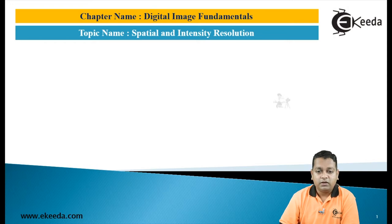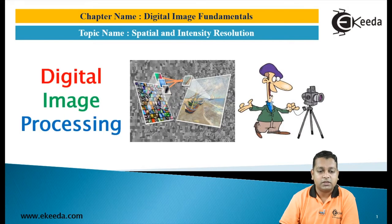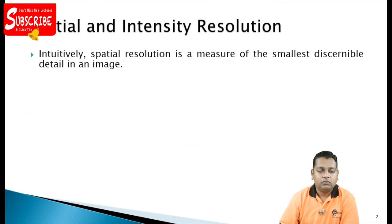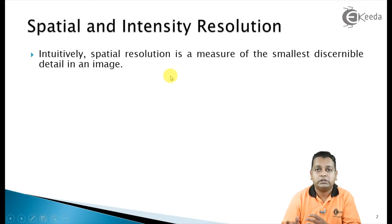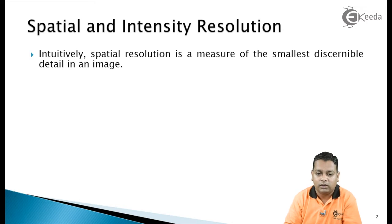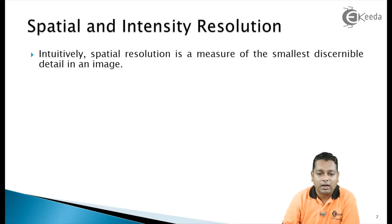Our topic is spatial and intensity resolution from the chapter Digital Image Fundamentals, subject Digital Image Processing. Intuitively, the spatial resolution is a measure of the smallest discernible detail in the image. From the previous video, we have discretization on the spatial coordinates as well as the amplitude level. If we have more number of fixed intervals on the space coordinate axis, we can say the spatial resolution is good.